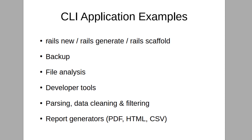Another thing you can do is build CLI applications — CLI stands for Command Line Interface. When you use Rails, Rails itself is a command line interface, because you can do 'rails new', 'rails generate', 'rails scaffold' — all of these commands you run in the terminal, that usually black window with white text. Ruby is really good for building these kinds of command line applications, as demonstrated by Rails itself.